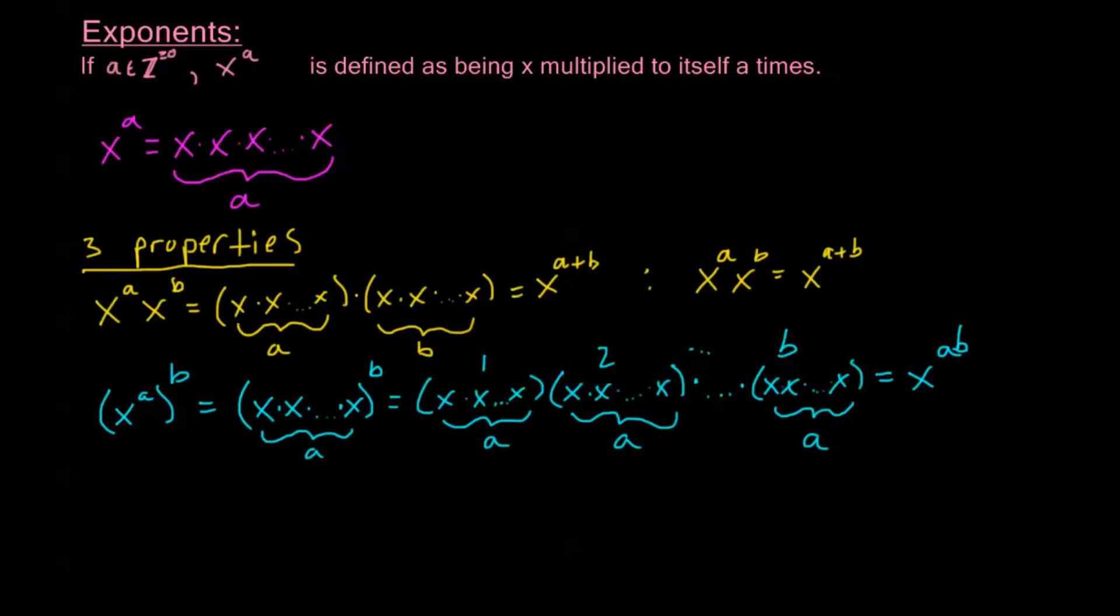So when we multiply two numbers that have exponents, two of the same number that have exponents, that's the same as adding those exponents together. And when I take a power of something with an exponent, that's the same as multiplying the exponents together. Now this last little property that I want to derive out here, let's just say we have x, y to the power a.